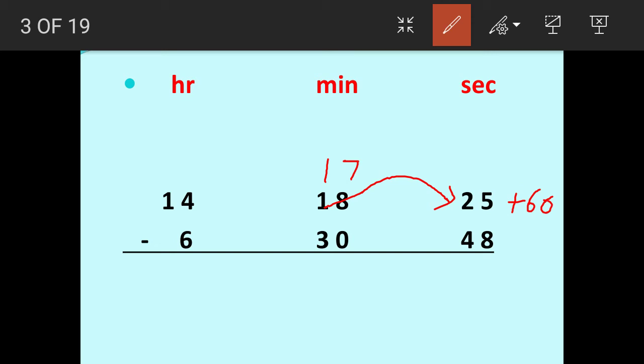Now 25 seconds plus 60 seconds, that becomes 85 seconds. Now we are going to subtract 48 seconds from this 85 seconds. 85 minus 48 is 37.